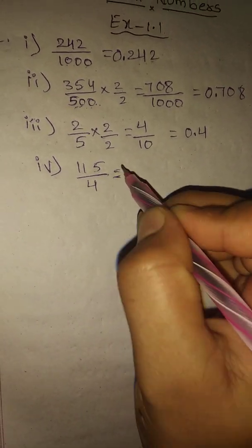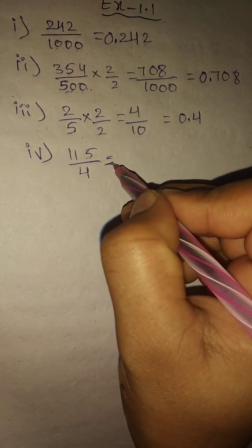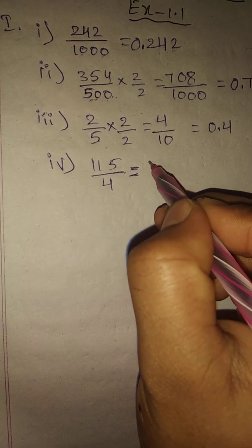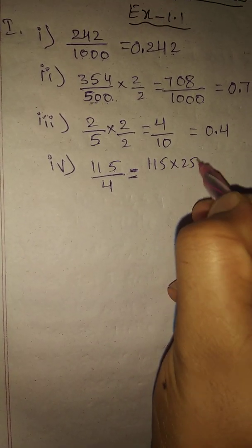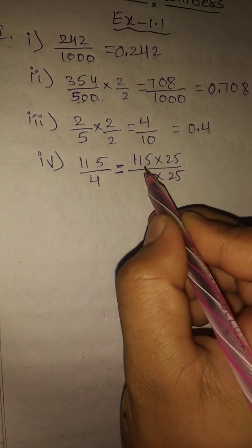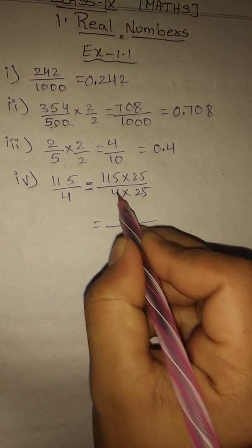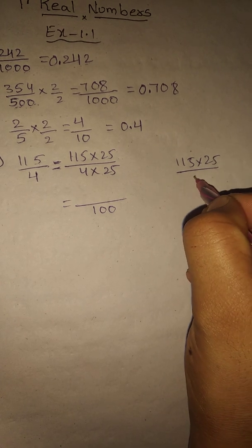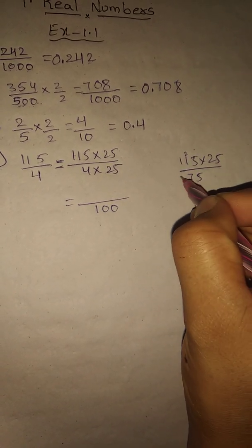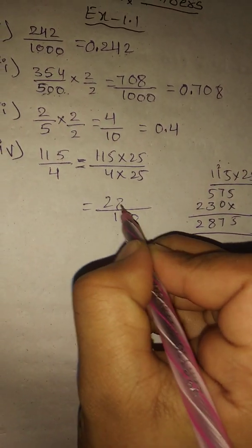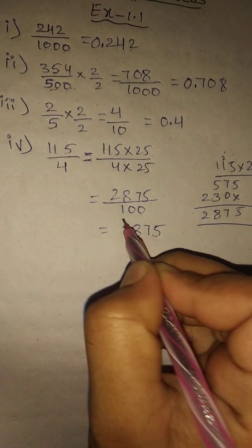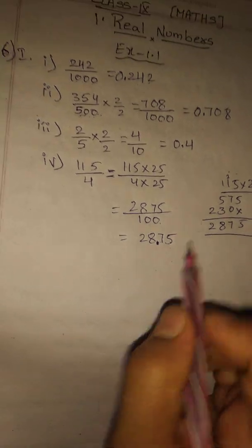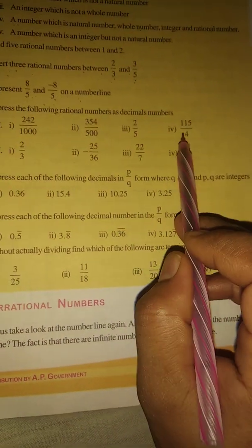Fourth problem: 115 divided by 4. We multiply both numerator and denominator — 4 times 25 is 100 — to get a power-of-ten denominator. The numerator becomes 2875 and denominator 1000. Write the numerator as it is, count two zeros from the right — one, two — and keep the decimal point. The answer is 28.75. This completes the first Roman.